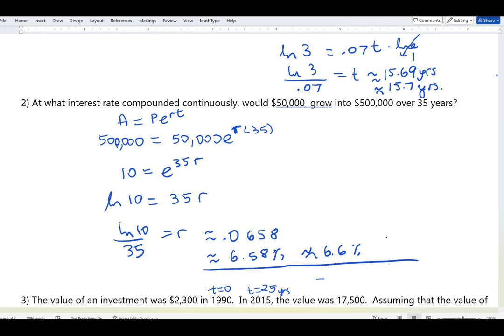You can round based on whatever the problem specifies; if unspecified, rounding to tenths or hundredths is fine. That was a quick review of problems from college algebra as well as the newer concept: understanding why exponential growth is implied when the growth rate is proportional to the existing amount.